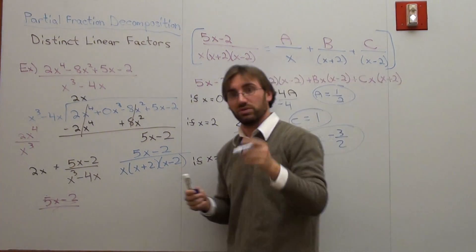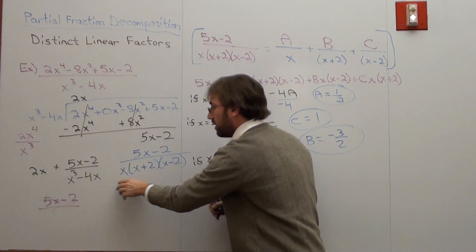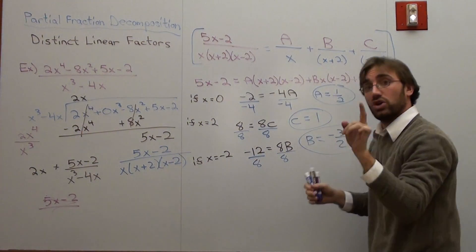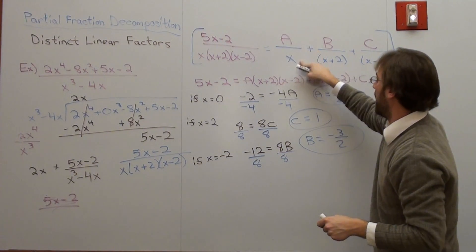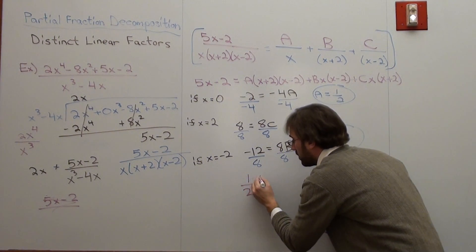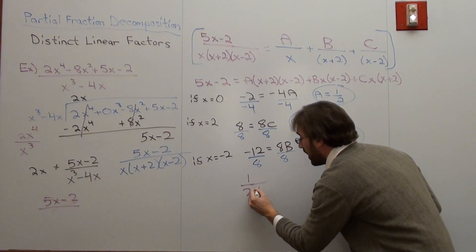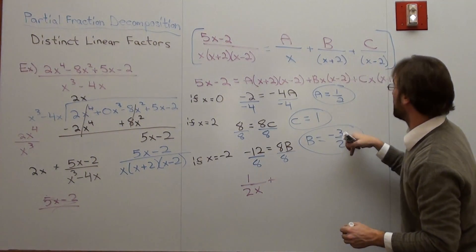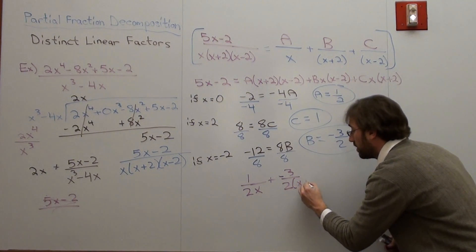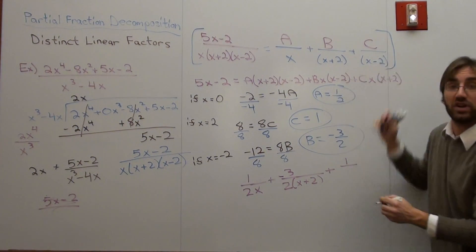Great. So, what did I just do? Well, I'm going to show you. Now, this problem right here is 5x minus 2 over x cubed minus 4x, which I turned into this, is actually this right here. I can rewrite it as these three fractions. So, that's what I'm going to do. So, it's A over x. My A is 1 half. So, it's actually 1 over 2x. Actually, x is on the bottom. 1 over 2x plus B, well, my B is negative 3 halves, so it's negative 3 over 2, and then it's x plus 2.